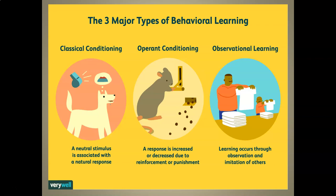Here are the three types roughly defined and illustrated. Classical conditioning, on the left, is when a neutral stimulus is associated with a natural response. Operant conditioning, in the middle, is when a response is increased or decreased due to reinforcement or punishment. And observational learning, on the far right, is learning that occurs through observation and imitation of others.